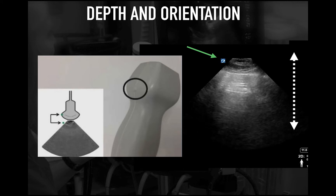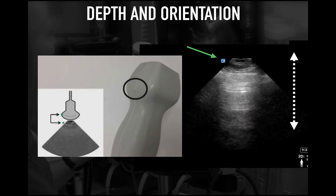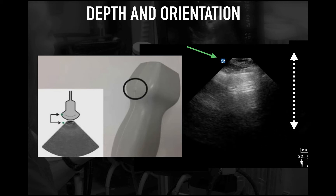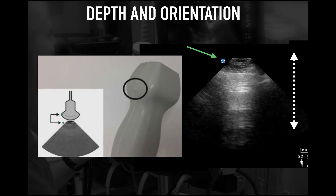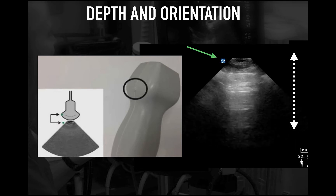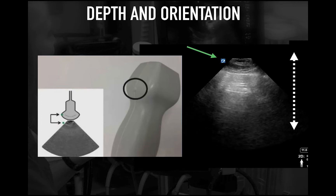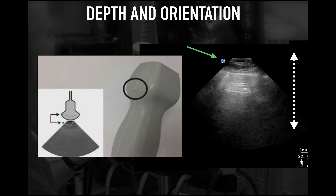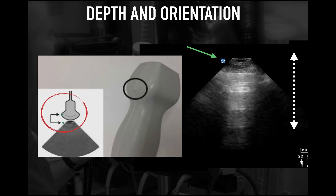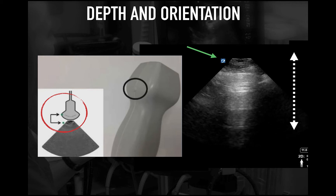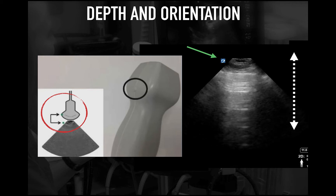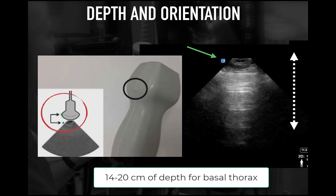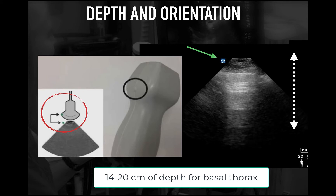It's critical to make sure you're looking at the right structures on the screen, done by having proper orientation and correspondence between your probe marker and your ultrasound marker on the screen. The marker should point towards the head of the patient, placing the head on the left side of your screen. It is also important to have the right depth — for pleural effusion evaluation, you need at least 14 to 20 centimeters of depth to allow penetration deep enough to identify a small but present pleural effusion.